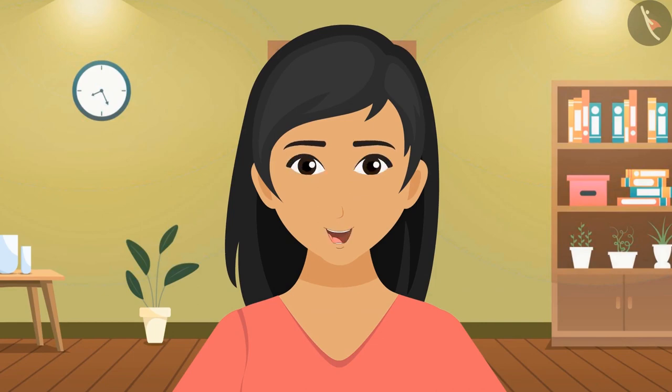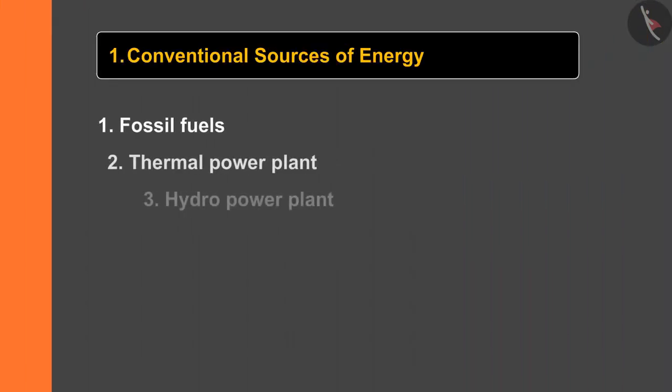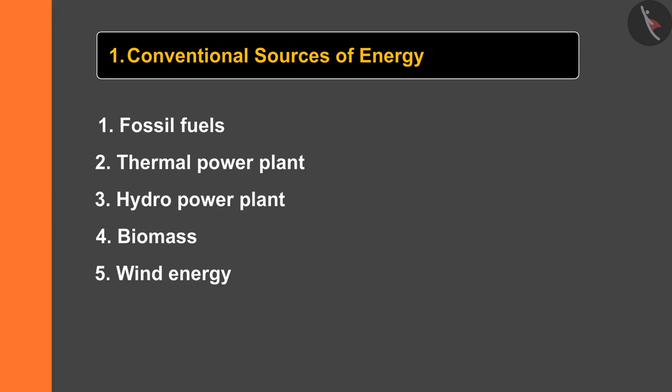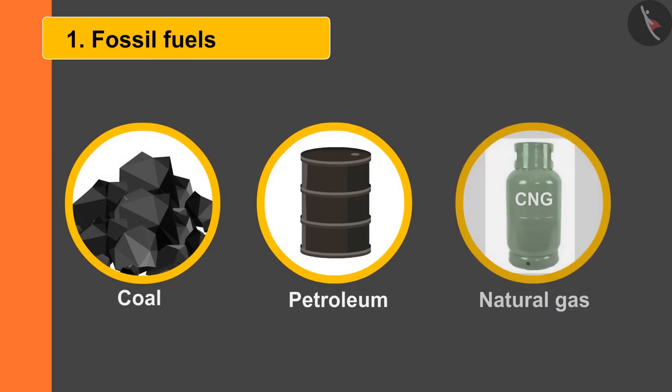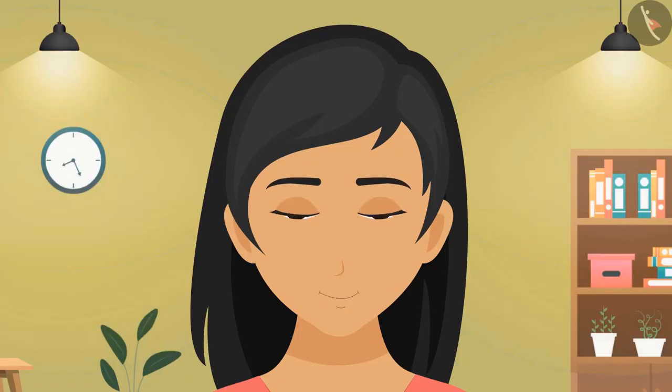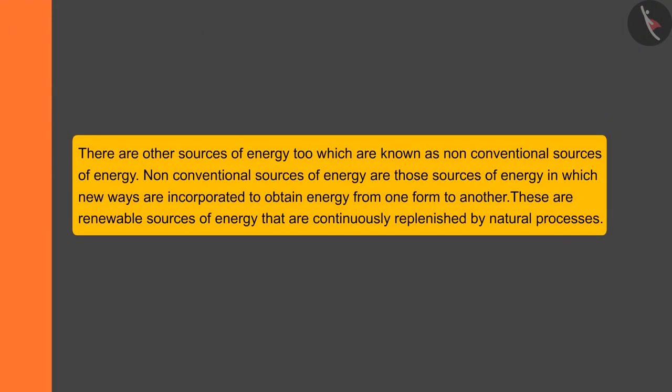As we learned about the conventional sources of energy and how electrical energy is obtained from various kinds of energy, the main source of energy is fossil fuels. The rate at which these fossil fuels are being used, one day will come when they will become extinct. Then from where will we get the energy? There are other sources of energy too, which are known as non-conventional sources of energy.